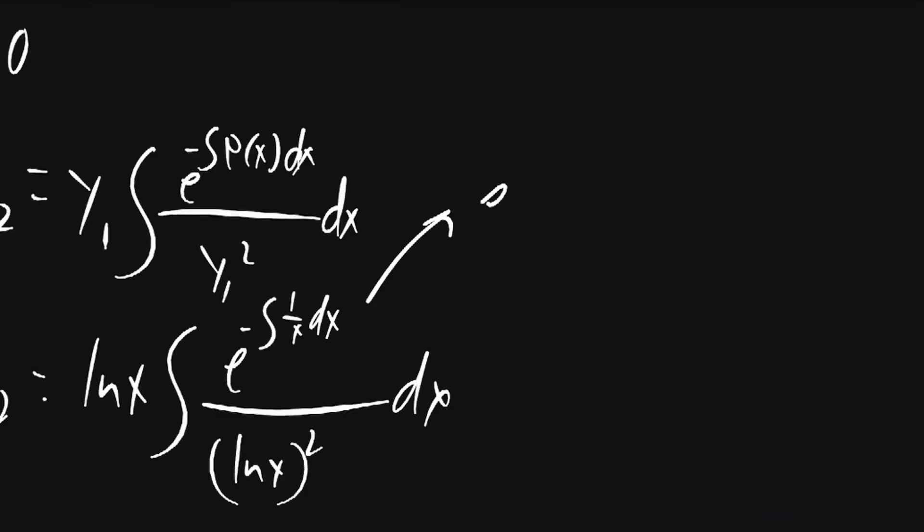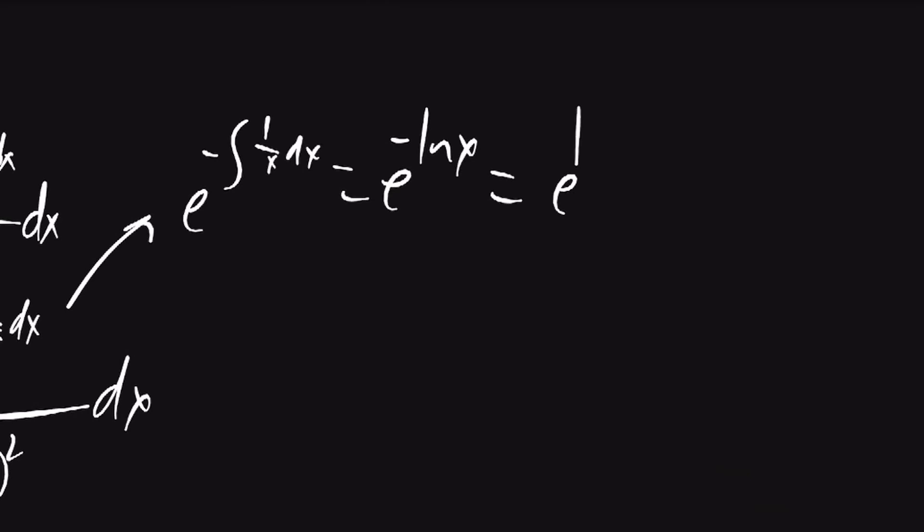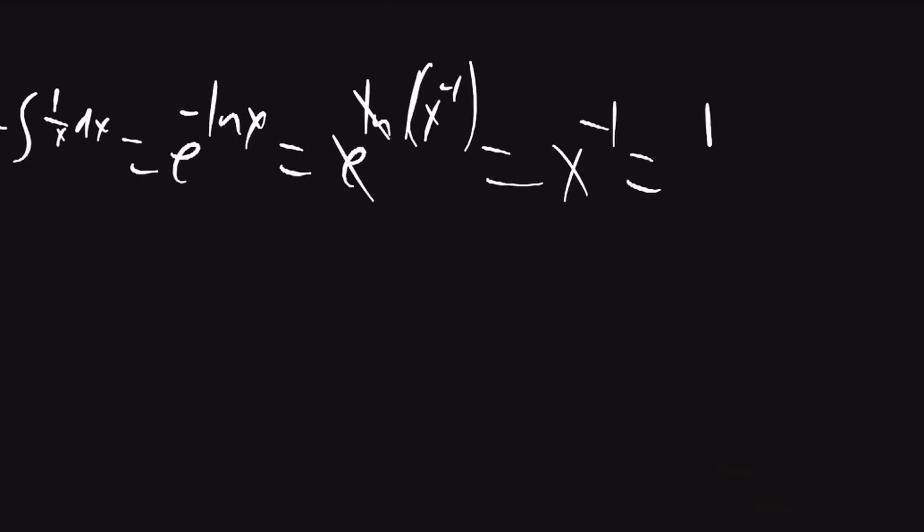The numerator will be e to the negative integral of 1 over x dx, which will become e to the negative lnx, which is equal to e to the ln of x to the negative 1. The e and the ln will cancel, but we'll be left with x to the negative 1, which is just 1 over x.